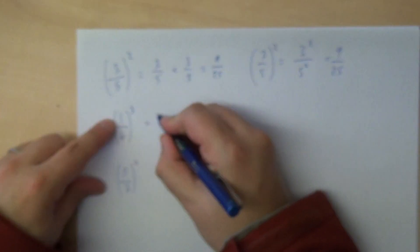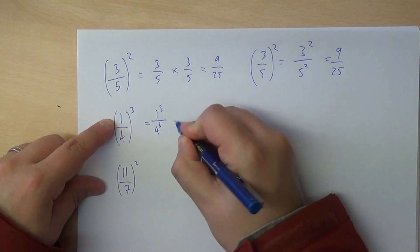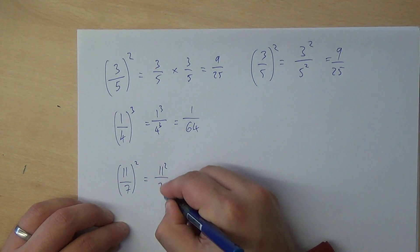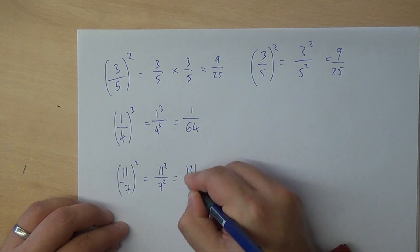A similar thing with cubes, we just get 1 cubed over 4 cubed, which is 1 64th, because you've learned your cube numbers at some point, and that's 121 49ths.